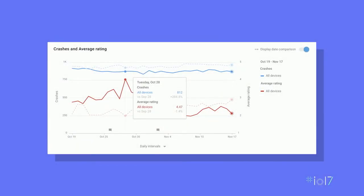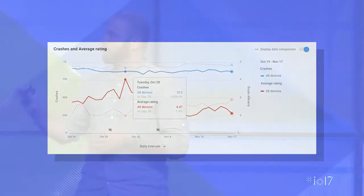On the chart, the two different metrics will be plotted with two different colors. The date range comparison will still be available, and the tooltip will include information about both metrics and different date ranges. This feature will allow you to quickly spot correlation or lack of correlation between different metrics.